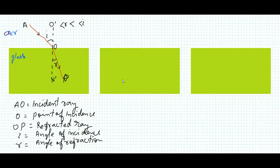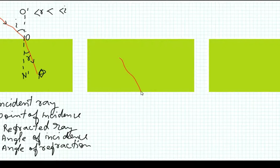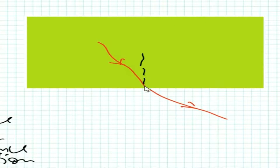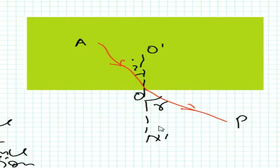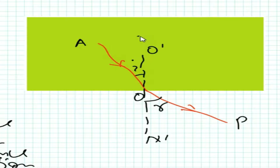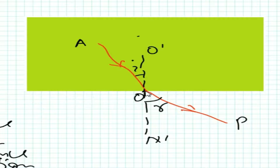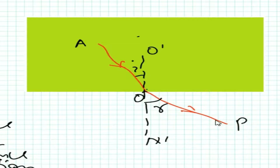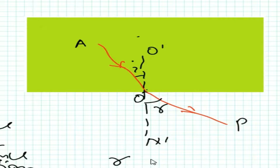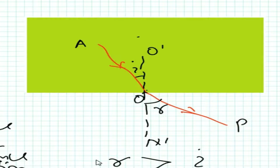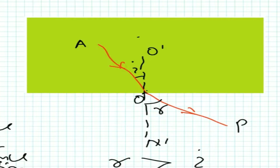The second case is when light travels from a denser medium to a rare medium — it bends away from the normal. This glass is the denser medium, this is the point of incidence, and we see that it bends away from the normal. In this case, angle r will be greater than angle i.